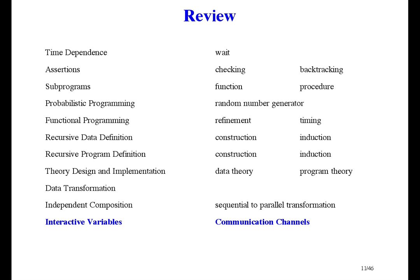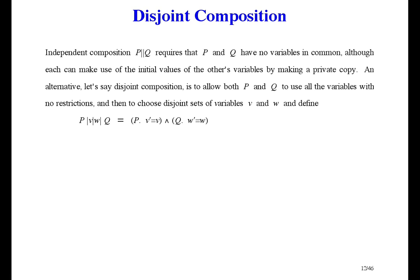For example, one of the exercises talks about disjoint composition. I'll read it. Independent composition P parallel Q requires that P and Q have no variables in common, although each can make use of the initial values of the other variables by making a private copy. An alternative, let's say disjoint composition, is to allow both P and Q to use all the variables with no restrictions, and then to choose disjoint sets of variables, V and W, and define disjoint composition like that.